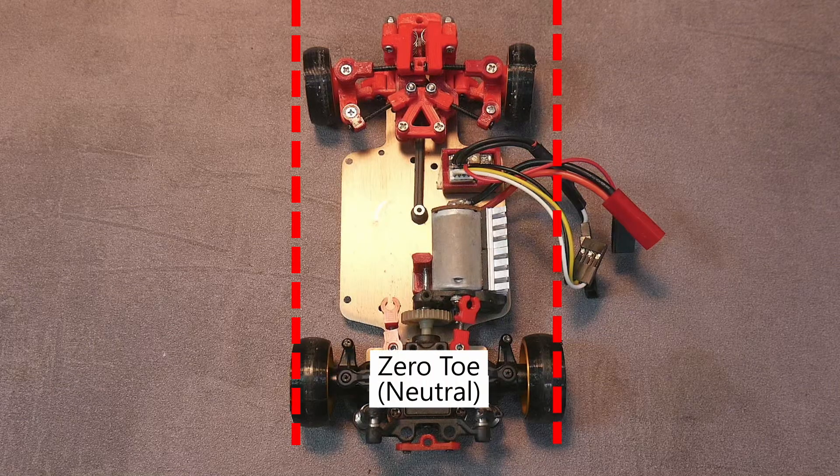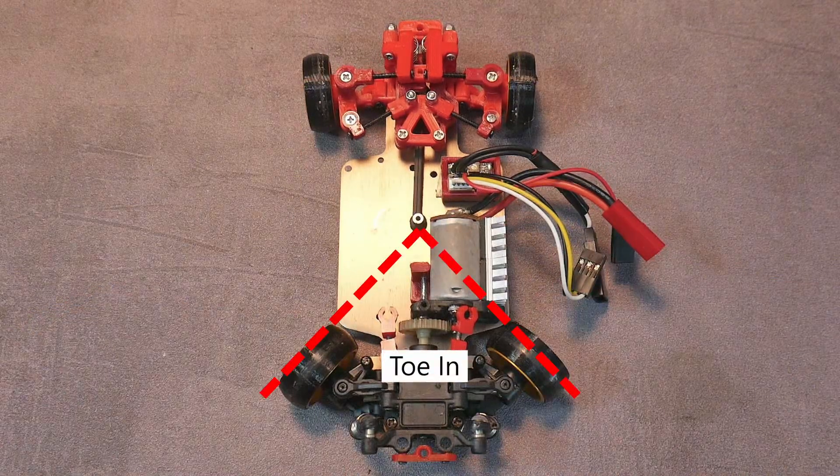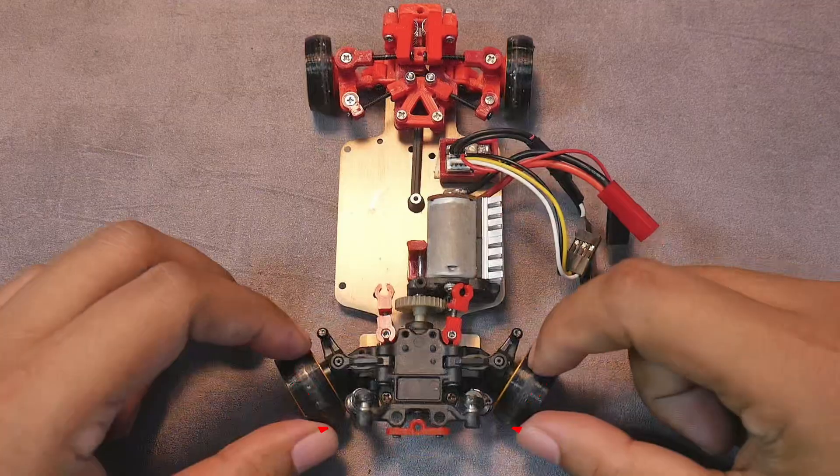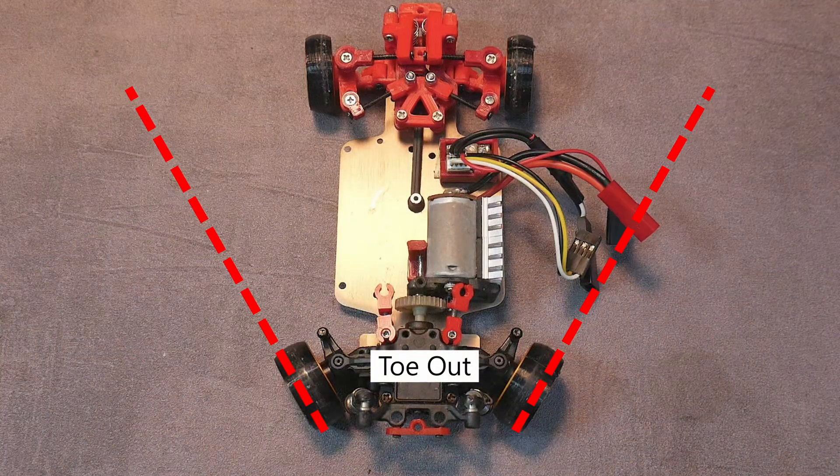This video will briefly and quickly explain the effects of rear wheel toe-in and toe-out on RC drift cars. This applies to RCs of any scale size.